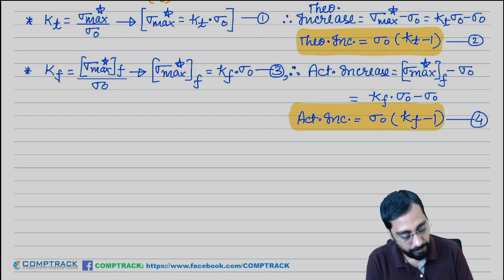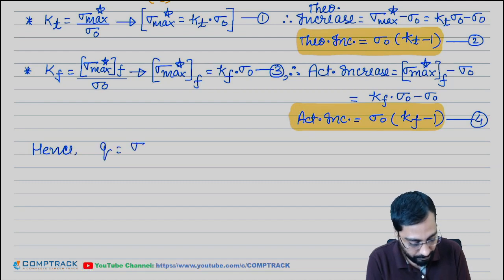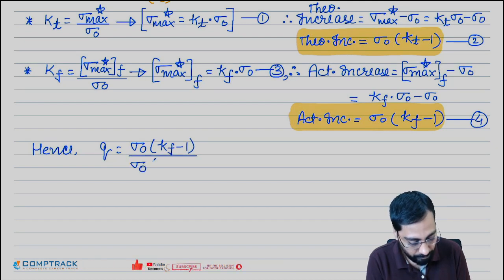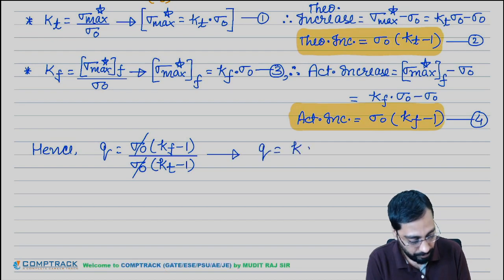Hence, the notch sensitivity q becomes: sigma naught times (KF minus 1), divided by sigma naught times (KT minus 1). This simplifies to q = (KF - 1) / (KT - 1). This is one more formula for KF: if notch sensitivity q and KT are both given in the question, then you can calculate KF.